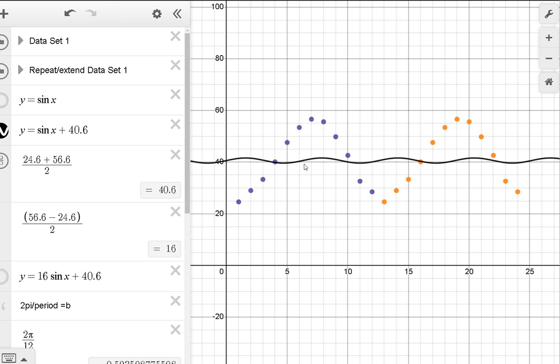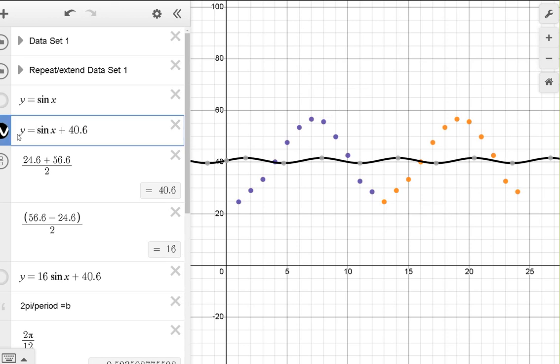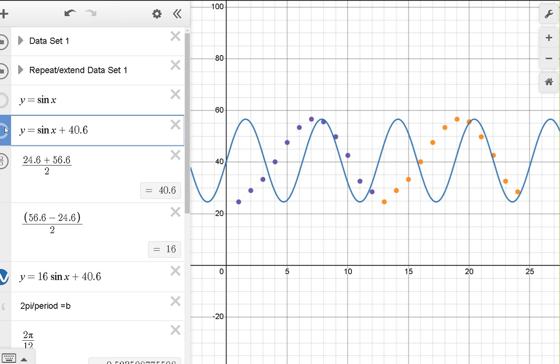What else do I got to do? It'd be nice if my sine function went up and down at the same height as these two. What is that height from the top of one to the bottom of the next? That distance is twice our amplitude. So if I take that distance and divide it by 2, 56.6 minus 24.6 and divide it by 2, that's 16. So that's giving me my value for A. I'll put that out in front here.